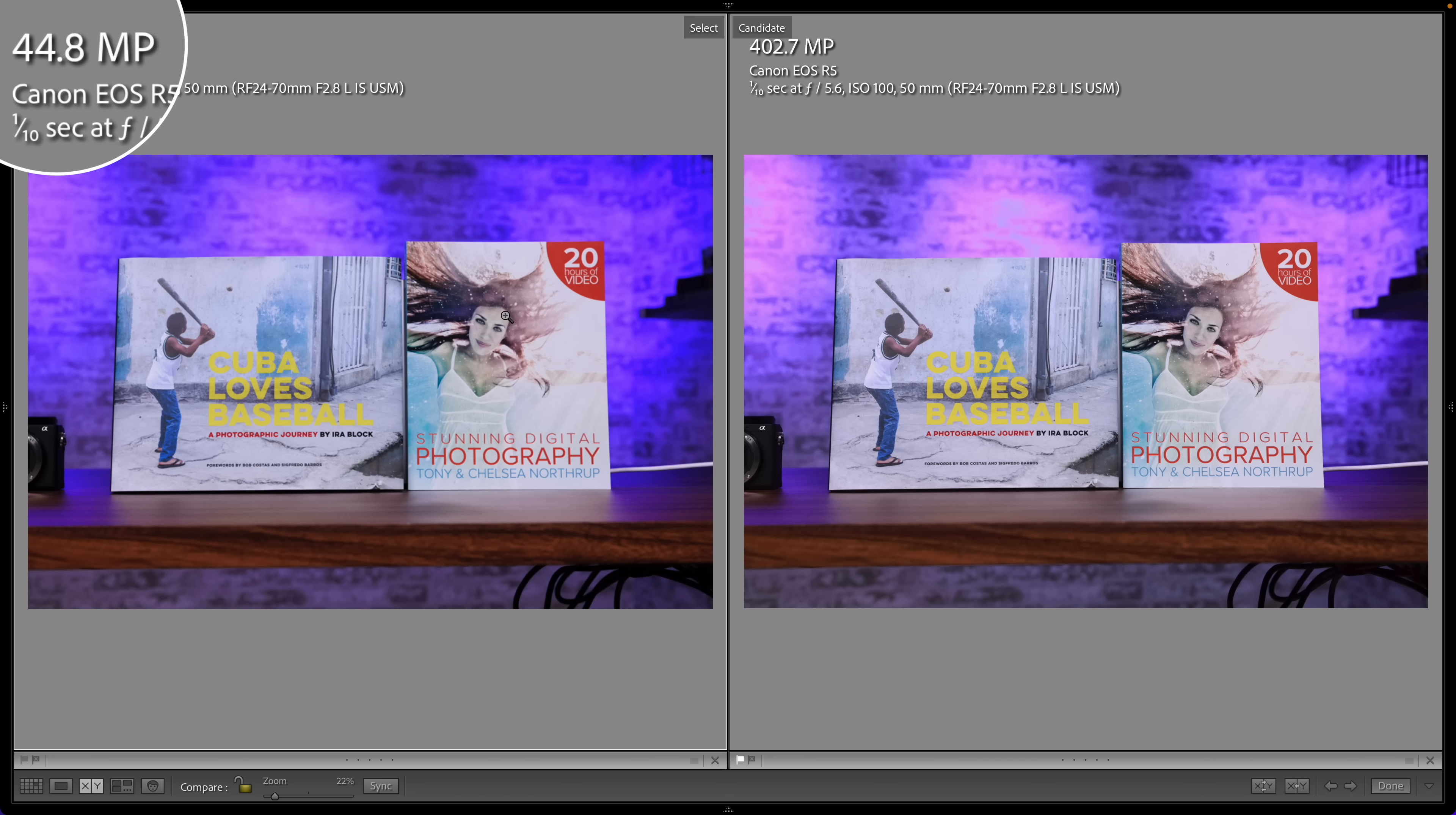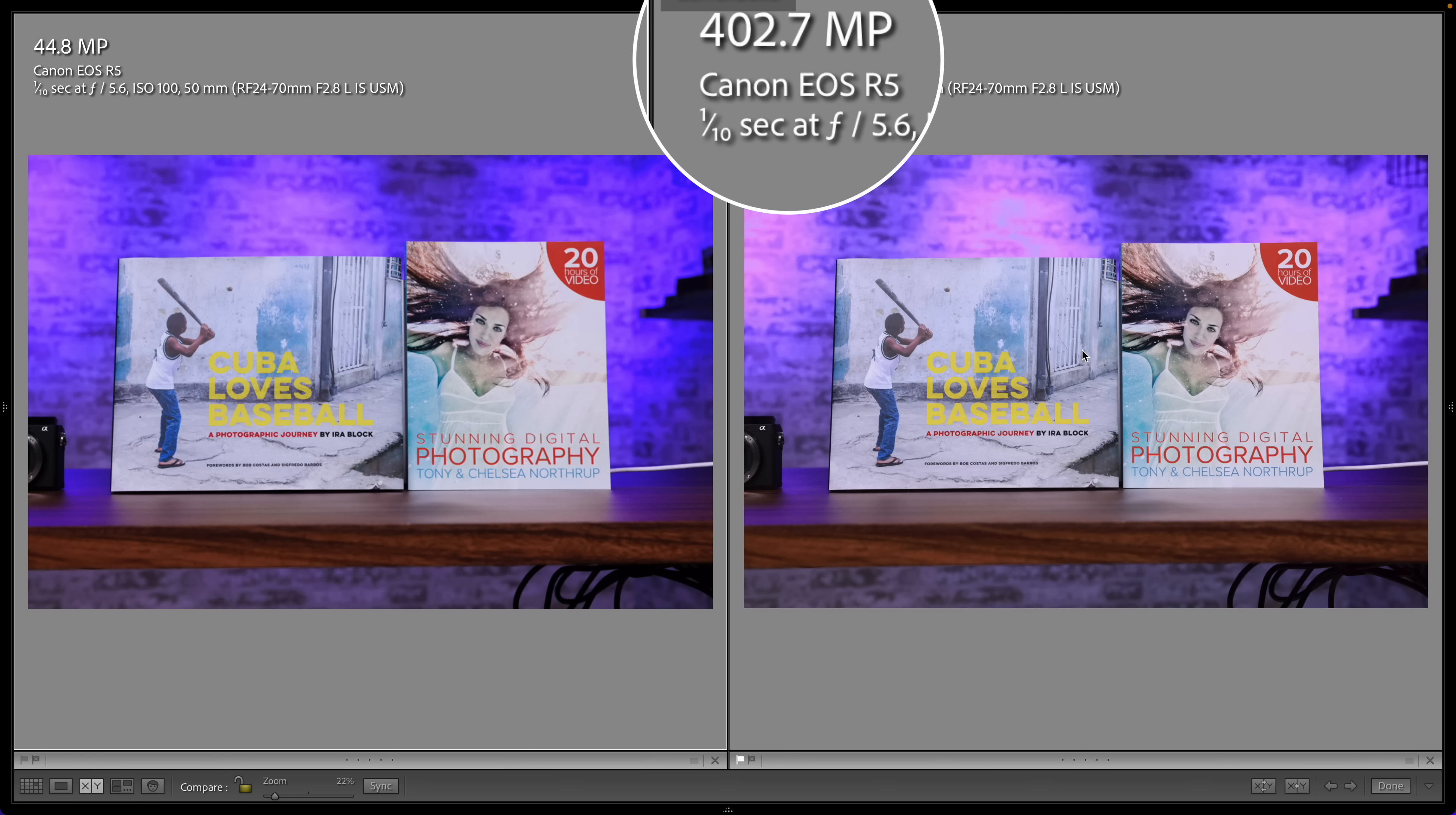That's really where the similarities between these two cameras end. I'll get into that more in a bit but first I want to show you the quality improvement that you get comparing a RAW file from the Canon R5 to its new 400 megapixel mode.